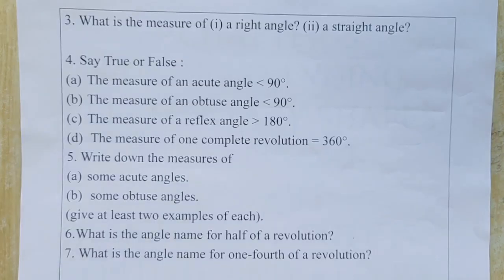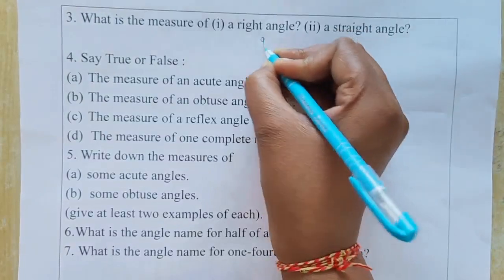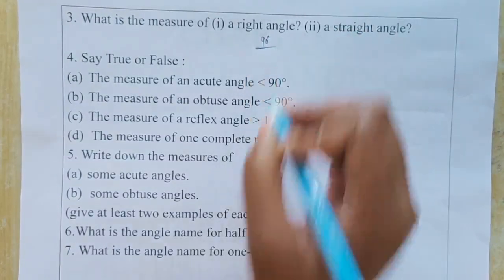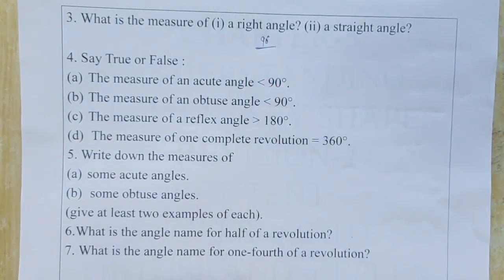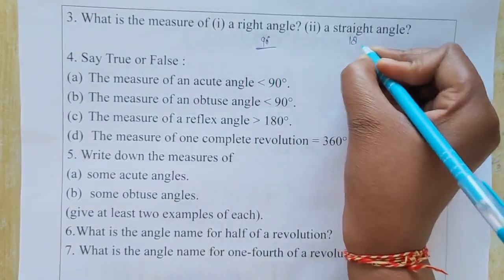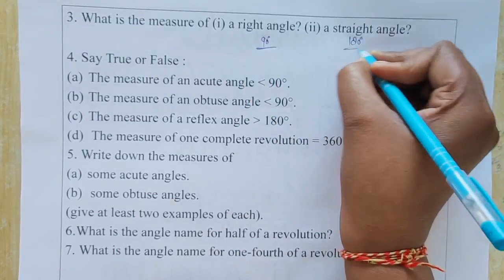Third question: What is the measure of a right angle? The answer is 90 degrees. What is the measure of a straight angle? The answer is 180 degrees.